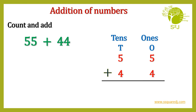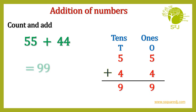Let's add them. 5 plus 4 is 9 and 5 plus 4 is 9. So 99. So 55 plus 44 is 99.